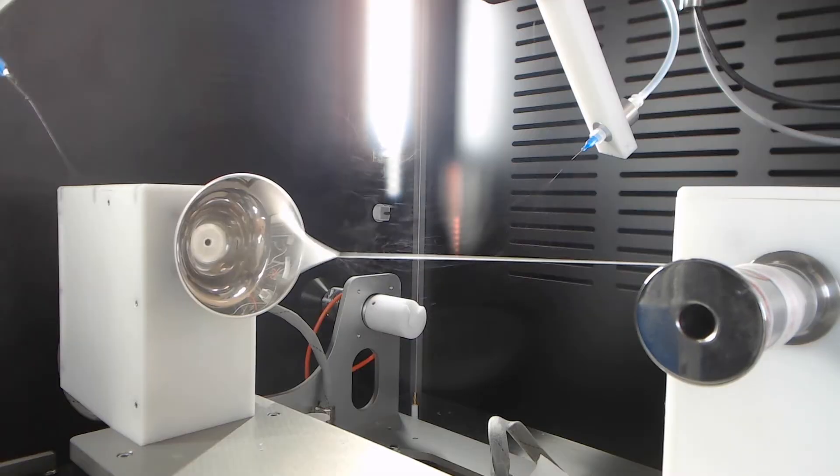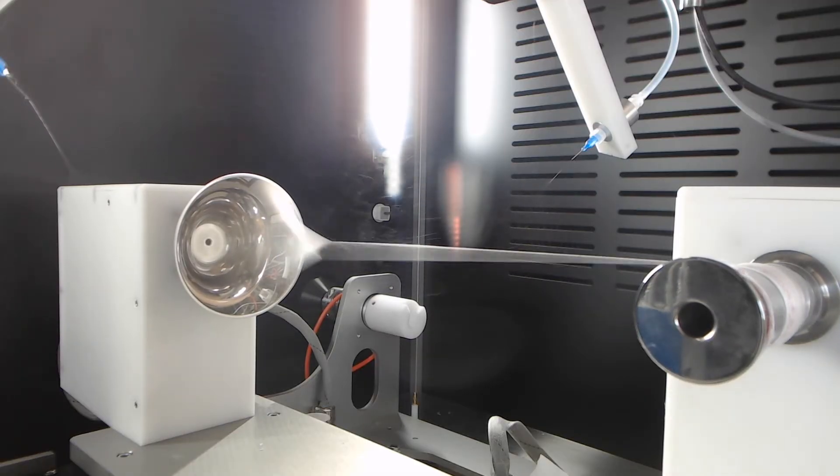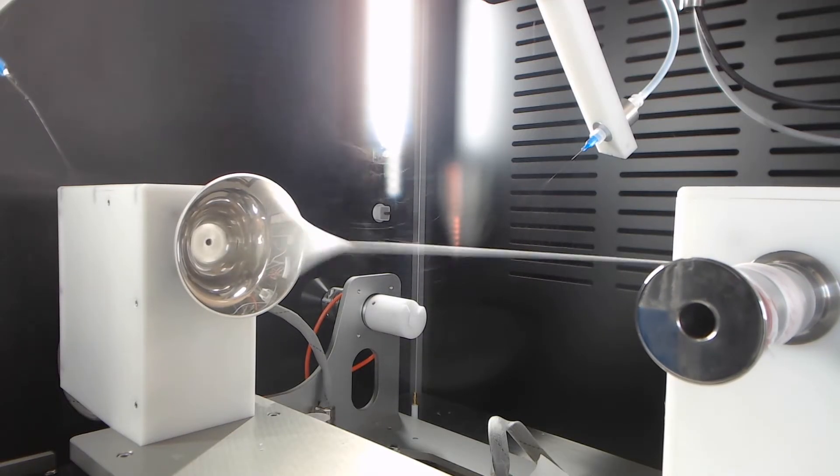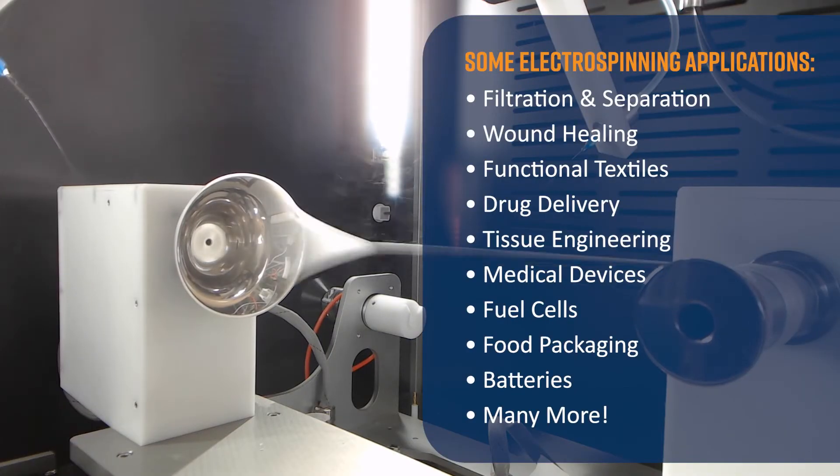But where do we see electrospinning in action? One fantastic application is in the production of nanofibrous materials. These materials are used in air filtration, wound dressings, and even in the creation of lightweight yet super strong materials for aerospace.